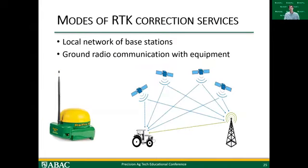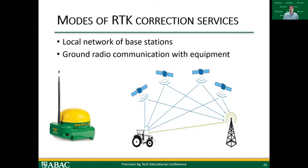There are two main ways to get sub-inch accuracy — the backbone of Precision Ag guidance and data location. The first is the traditional approach most of us are familiar with: a local network of base stations with ground radio communication on your equipment. You have a radio that attaches to or is integrated into your globe or receiver, and it communicates directly with a radio tower from your local provider. Correction services come directly to you — generally within five to ten miles. This has been the standard for RTK for quite a while.